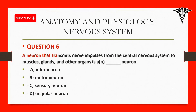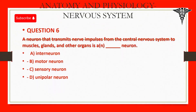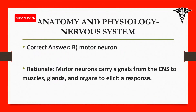Question 6: A neuron that transmits nerve impulses from the central nervous system to muscles, glands, and other organs is: A. Interneuron. B. Motor neuron. C. Sensory neuron. D. Unipolar neuron.